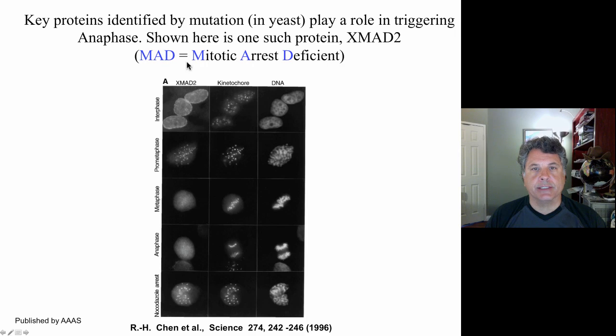And the MAD protein or mitotic arrest deficient protein is responsible for setting up the events that will allow anaphase to occur. And if you're deficient in this, you can't arrest at the anaphase checkpoint. And so if you follow kinetochore, these are all the same cells here, all three columns are the same nuclei visualizing different features.